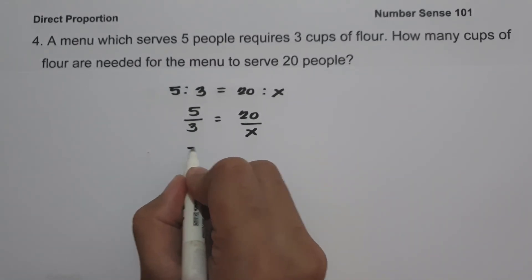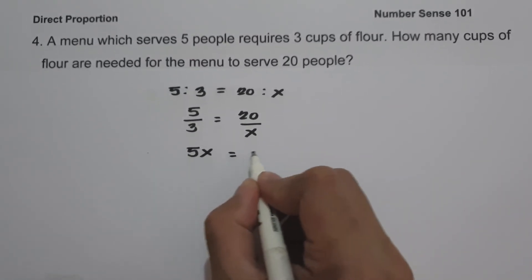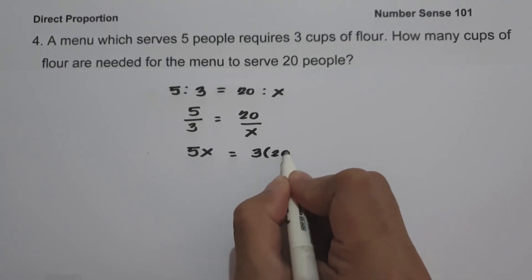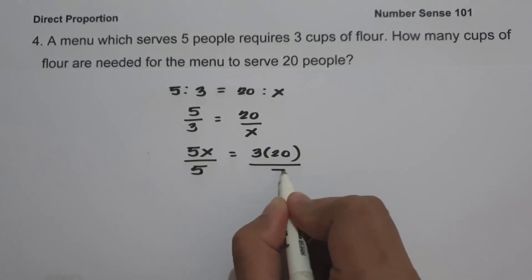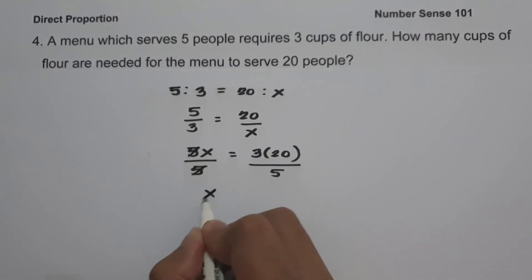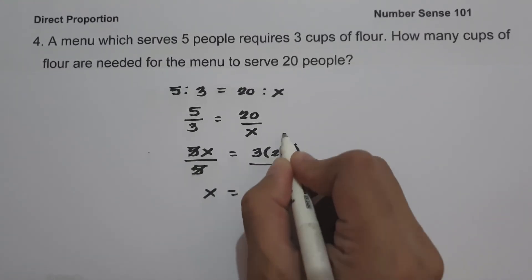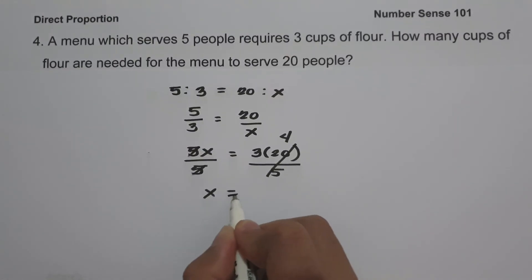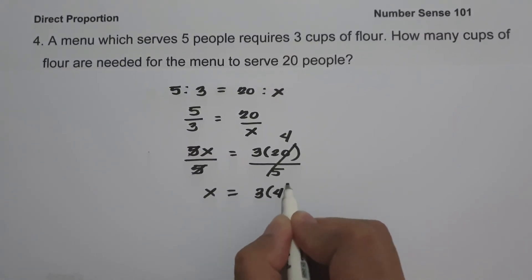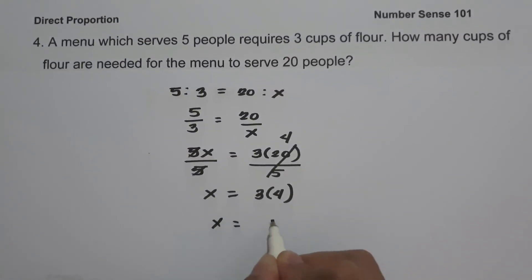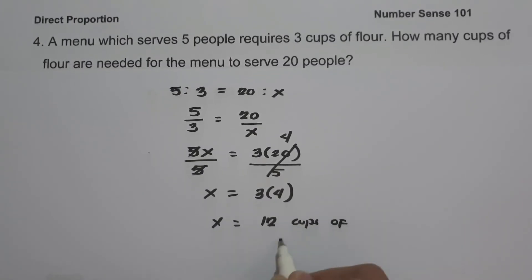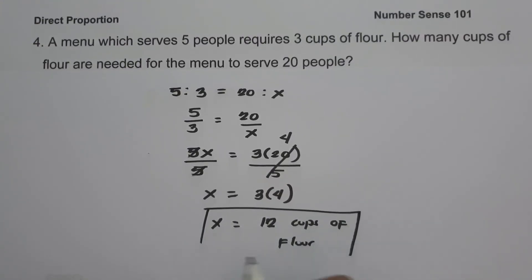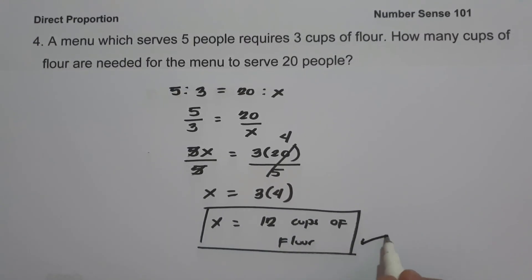So let us have 5 times X, that is 5X, and let us have 3 times 20. Let us divide both sides by 5. Let us cancel this one. 20 divided by 5, that is 4. So we are going to have 3 times 4. 3 times 4, that is 12. So this will be the number of cups of flour needed for the menu to serve 20 people, and this will be our answer.